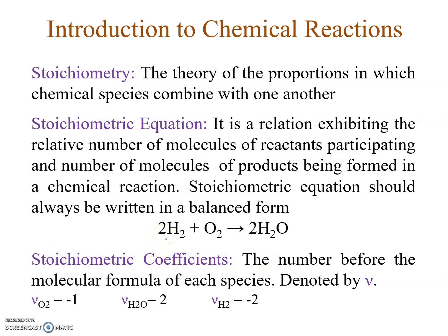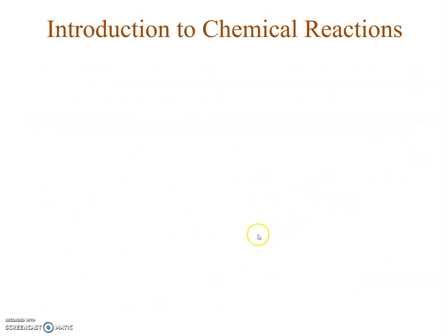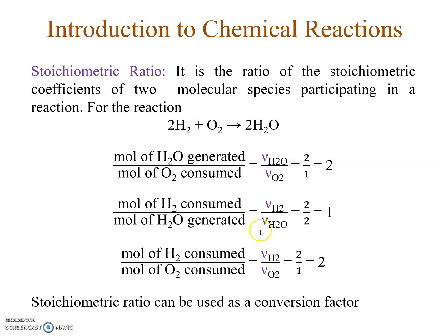The numbers in front of the molecular formulas are known as stoichiometric coefficients. If a species is on the reactant side, its stoichiometric coefficient carries a negative sign because reactants get consumed. So the stoichiometric coefficient of H₂ is −2, that of O₂ is −1, and that of H₂O is +2.